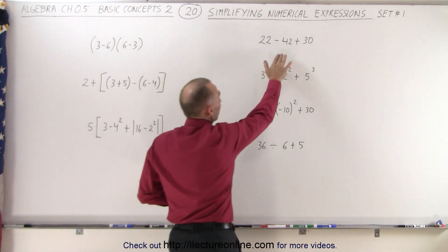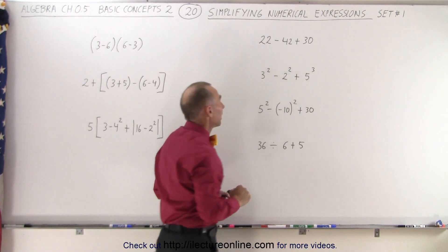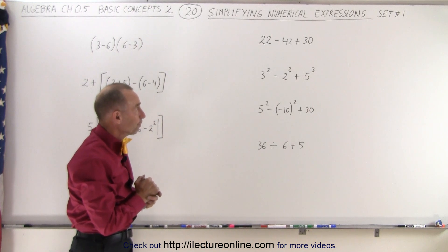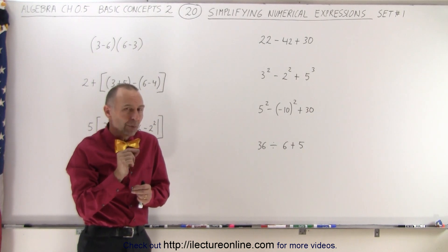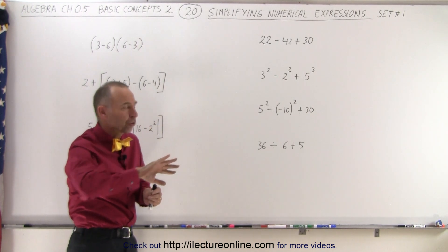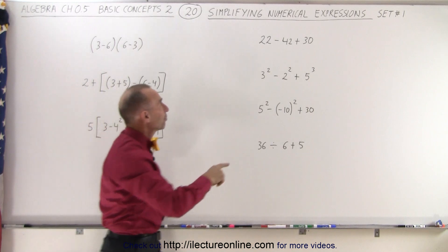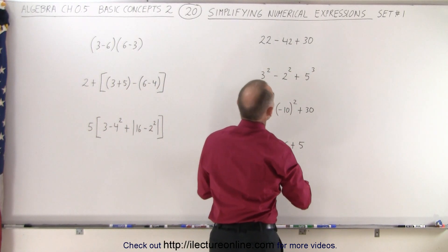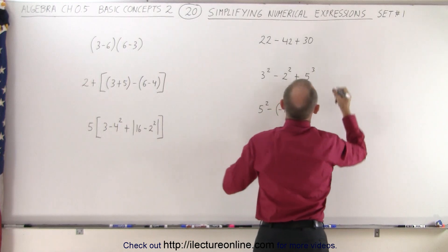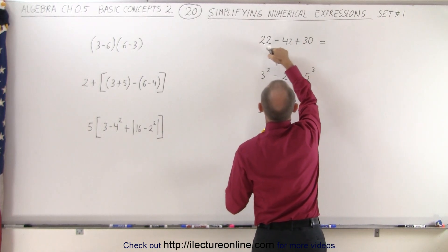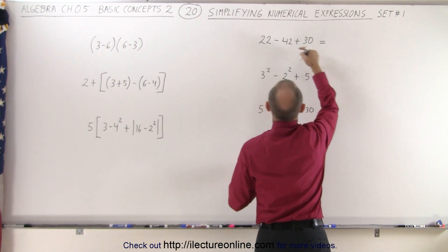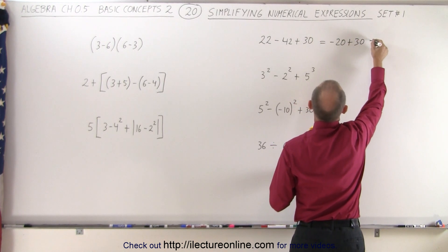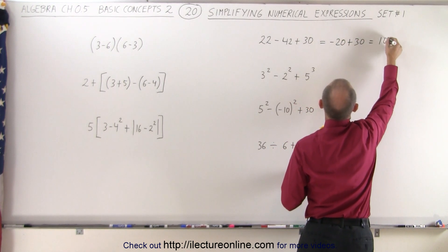We're going to start with the upper right corner, and we only have an addition and a subtraction. The rule says we must start from the left and work to the right, so we must first subtract 42 from 22, and then add 30 to that. So this will be equal to 22 minus 42, that's equal to minus 20, and then plus 30, which is equal to a positive 10.